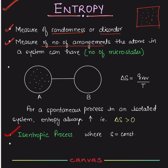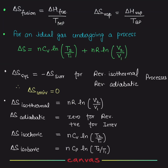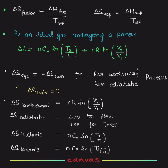An isentropic process is where entropy is constant — that is called isentropic. Delta S fusion equals delta H fusion divided by melting point. And for a vaporization process, delta S vaporization equals delta H vaporization divided by boiling point.